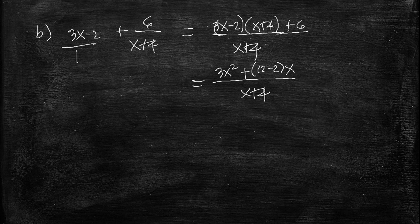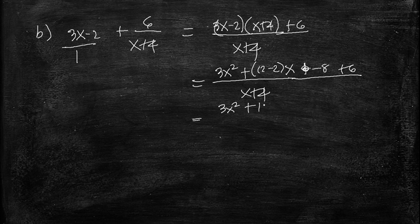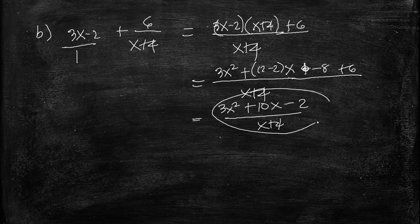Continuing letter B: 12 minus 2x minus 8 plus 6. Combining like terms gives 3x squared plus 10x minus 2, all over x plus 4. That is the result for letter B.